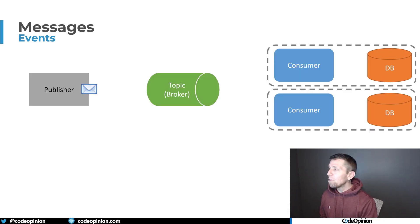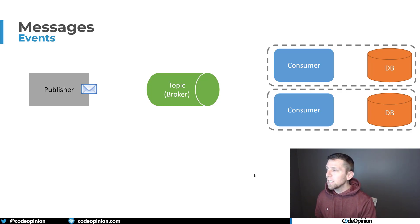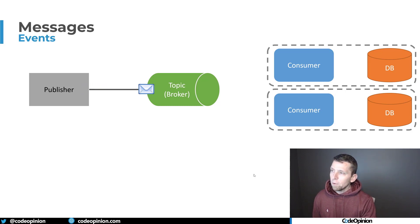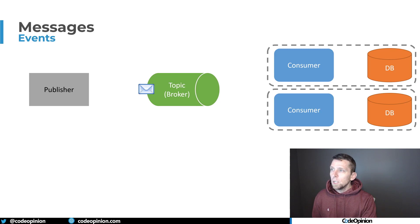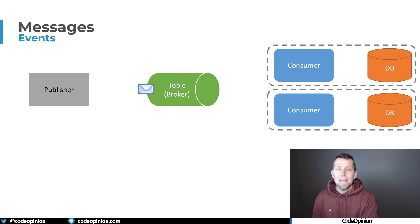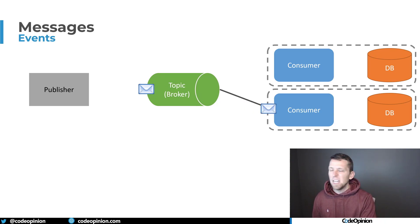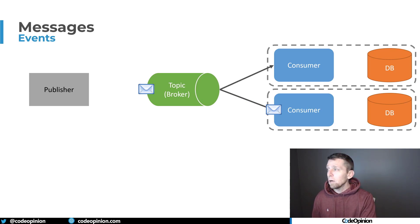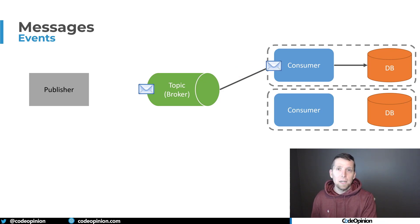In the illustration, we have a publisher — that single publisher that owns the event schema — publishing to a topic on our broker. From there, I have two consumers defined. Each consumer can independently receive and consume that message and handle it whichever way it needs to. At the exact same time, a separate consumer can also receive that exact same message and interact with it however it needs to.